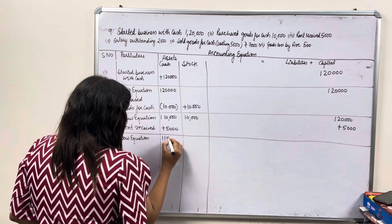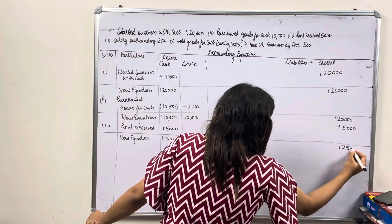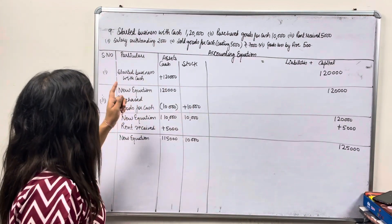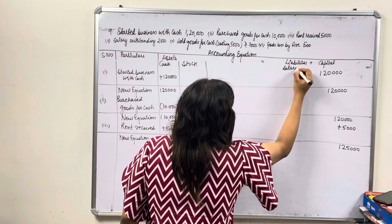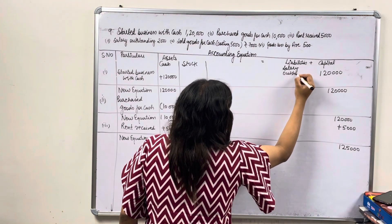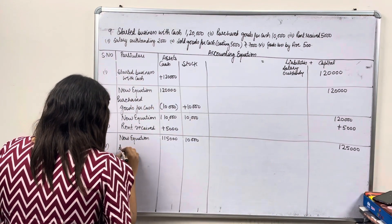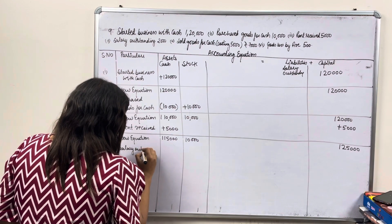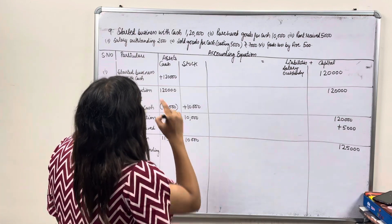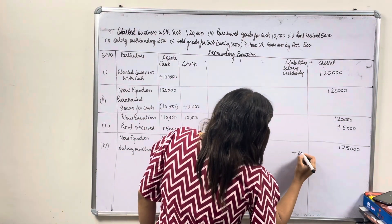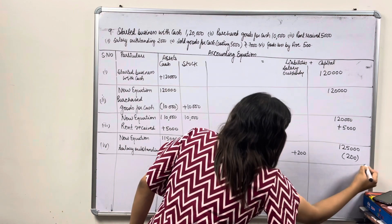New equation: cash 1,15,000, stock 10,000, capital 1,25,000. Fourth transaction: salary outstanding. If any expense is outstanding, it becomes a liability. Salary outstanding 200 — liabilities plus 200, capital minus 200. New equation updated accordingly.